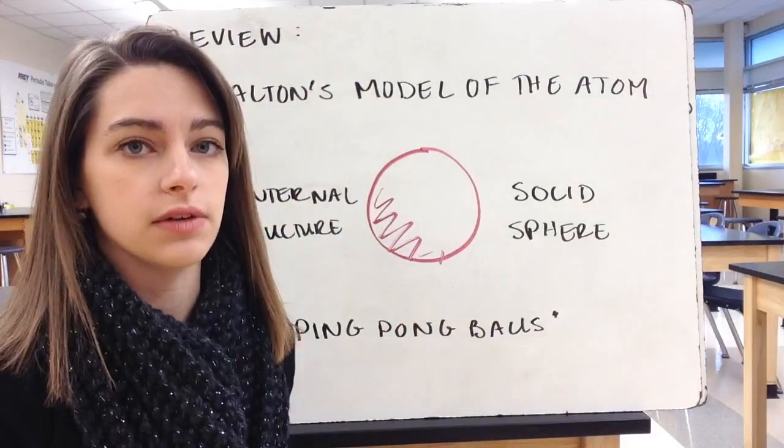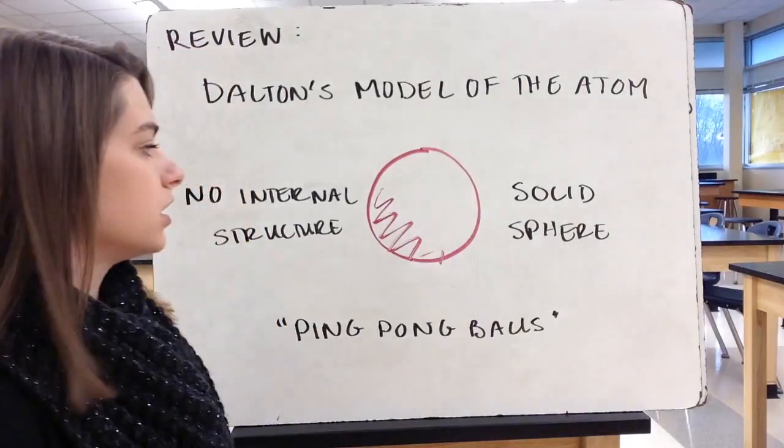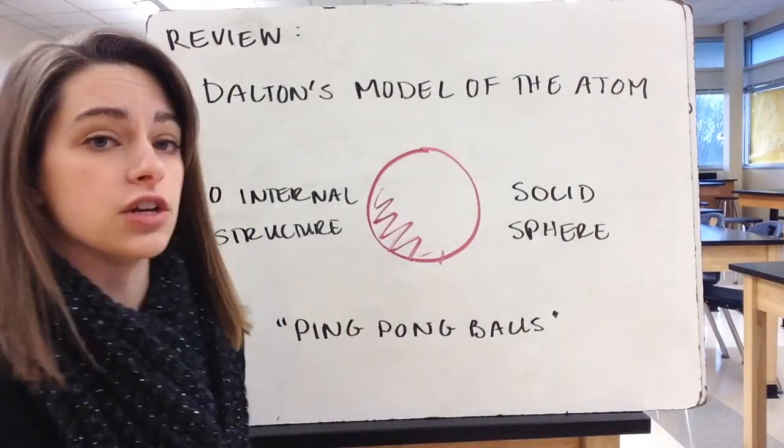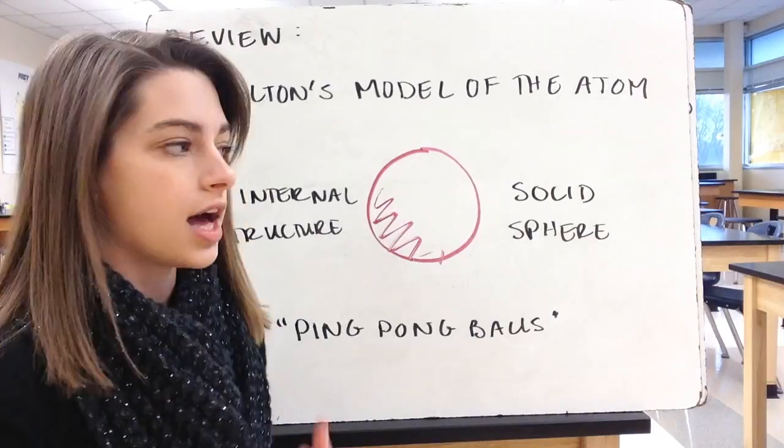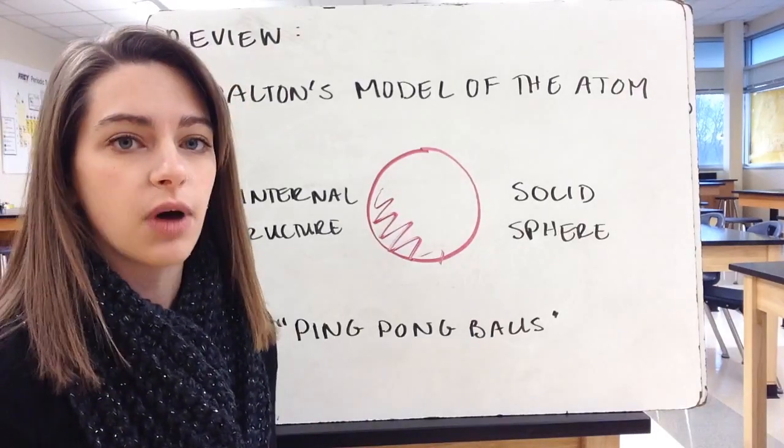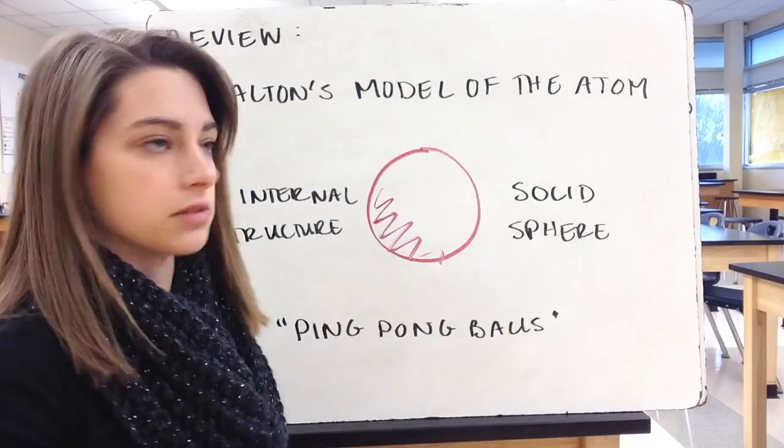Really quickly I want to review what our first model of the atom was, and that was Dalton's model of the atom. Dalton's atom looked like this. It had no internal structure. It was just a solid sphere. You could think of it like a ping pong ball or a baseball or some sort of solid sphere. There was nothing inside of it.